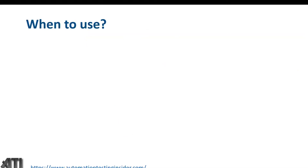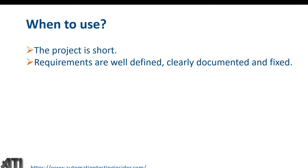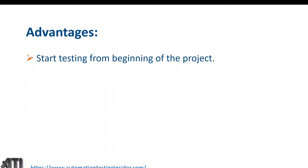When should you use the V model? Use it when the project is short, requirements are well-defined, clearly documented, and fixed, the product definition is stable, and there are no ambiguous or undefined requirements. Like the waterfall model, it is most useful for short-term projects.